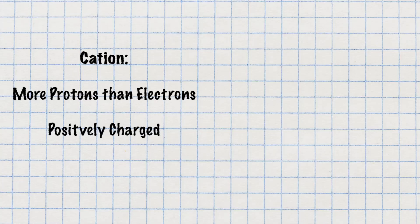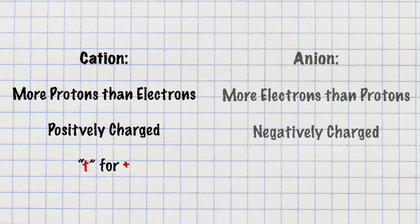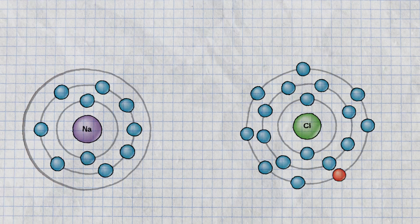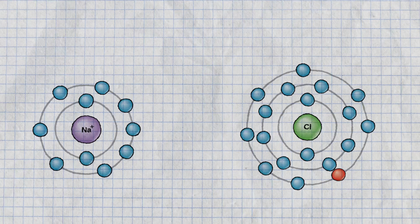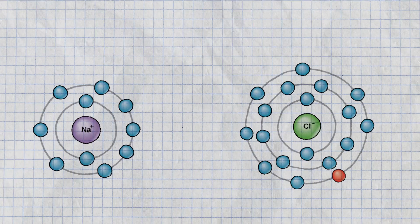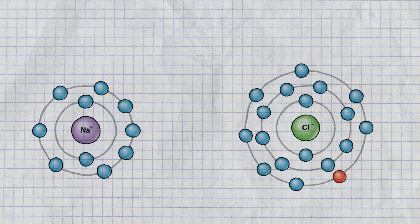If an atom has more protons than electrons, it forms a cation and is positively charged. If there are more electrons than protons, it forms a negatively charged ion called an anion. In the animation, sodium loses an electron and becomes a sodium cation, or sodium plus, giving it a full valence shell. Chlorine eagerly accepts an electron, becoming the chloride anion, Cl minus. The opposite charges of the sodium cation and chloride anion create a strong attraction, forming the ionic bond. Compounds are created when these ionic bonds form.